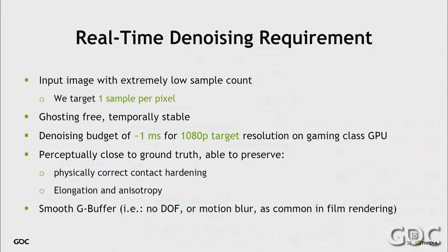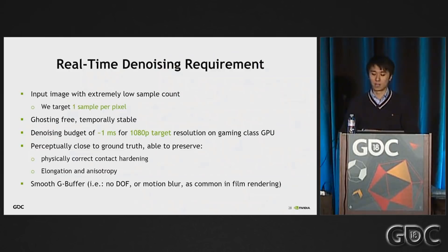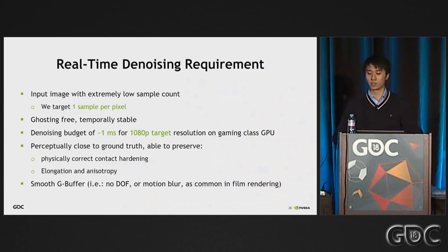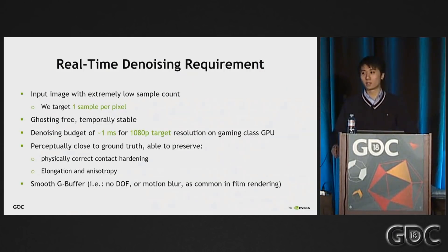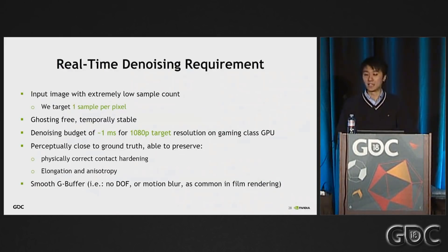For real-time rendering in games, we have a totally different set of budget and requirements. First, it's simply not realistic to afford more than a very few rays per pixel, so we target one sample per pixel for all the effects we're interested in denoising. Second, we want to support dynamic scenes including dynamic cameras, moving light sources, and moving objects — so using temporal information without correct motion vectors is not an option. We also want temporally stable, flickering-free results across frames. Third, the denoising budget cannot be too high since it's a newly added pass; we target one millisecond for 1080p images on gaming-class GPUs.